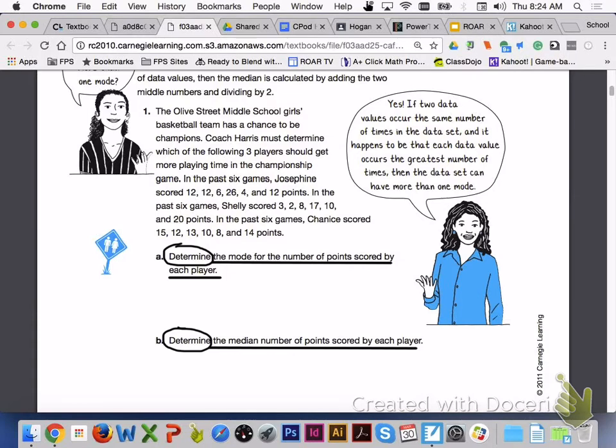For number one, the Olive Street Middle School girls basketball team has a chance to be champions. Coach Harris must determine which of the following three players should get more playing time in the championship game. In the past six games, Josephine scored 12, 12, 6, 26, 4, and 12 points.